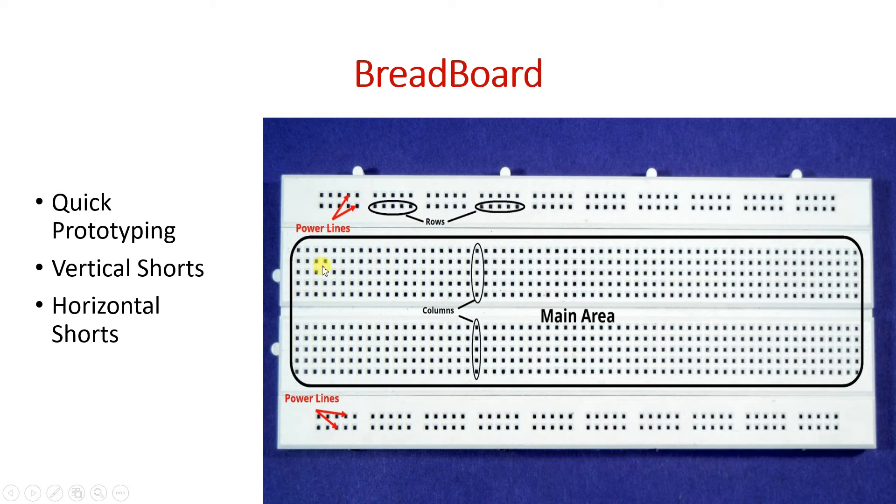Similarly, we have interconnection of five holes in a number of such vertical lines. Let's call them columns. All the columns are vertically shorted with each other. Let's call this the rows. Each row is also having a group of five holes, and all of them are shorted with each other. There are total ten five-hole groups in breadboard.